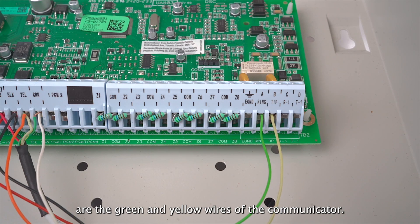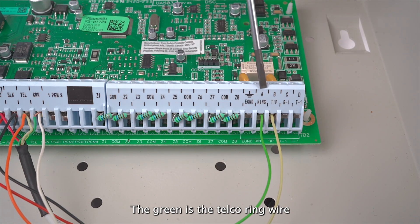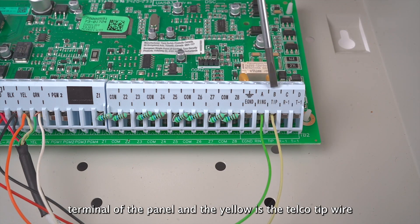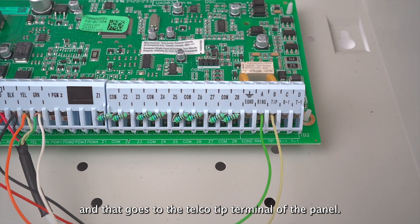The last two wires that we have are the green and yellow wires of the communicator. The green is the telco ring wire and that goes to the telco ring terminal of the panel, and the yellow is the telco tip wire and that goes to the telco tip terminal of the panel.